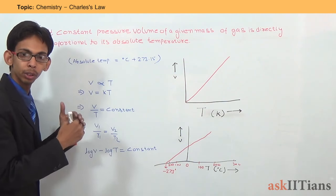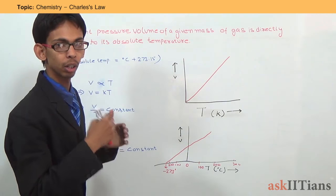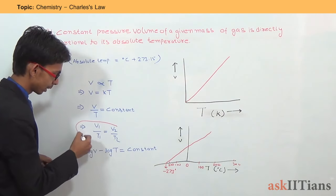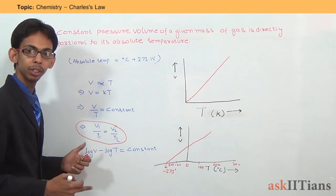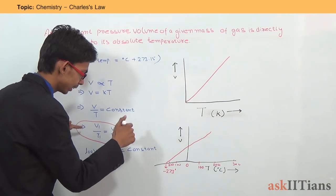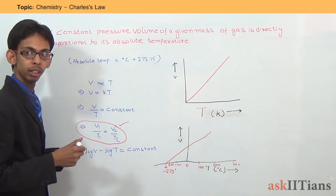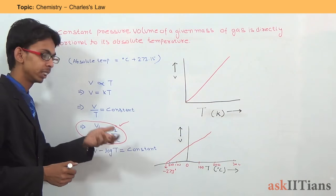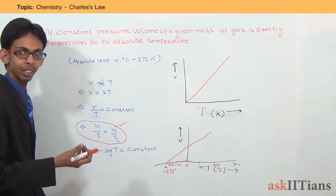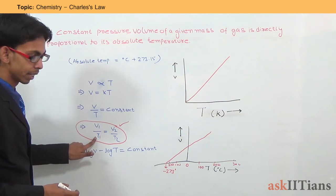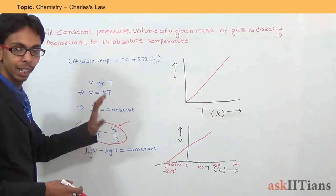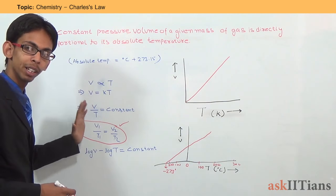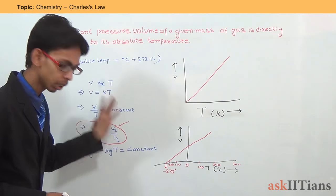Or we can write that V upon T equals a constant K — meaning the ratio of volume and temperature for a gas is always constant. We can also write this in another form: V1 upon T1 is equal to V2 upon T2. This is a very useful form of Charles's Law used for solving problems, and this ratio of volume to absolute temperature remains constant.